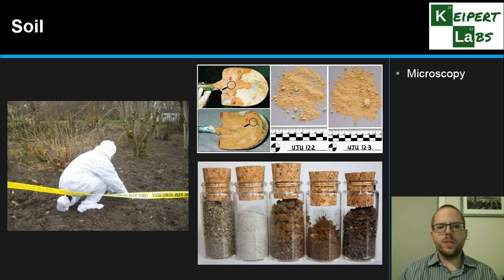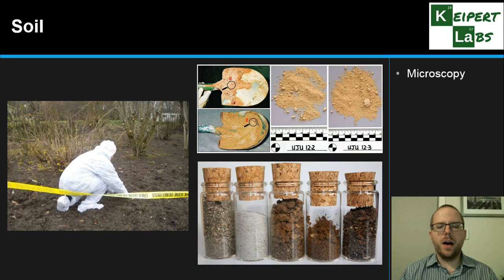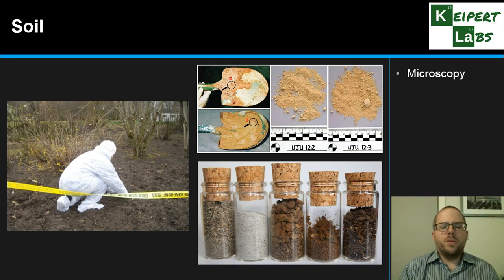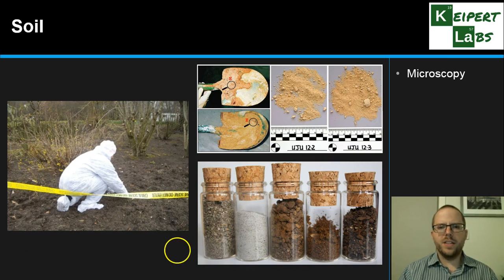One of the first things we would do for something like this is the classic non-destructive technique of using microscopy — examining using a stereo microscope, where we're looking with two lenses to get a 3D perspective, to observe the characteristics of that soil sample. So identifying if there's any insect activity or some organic material, or other more specific or identifying features that might be present in the soil. It might relate to the surrounding area, the time of year, or some particular plant or animal matter that might be nearby, maybe animal feces. Being able to examine it with a microscope and identify its features is an understandable first step.